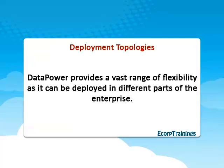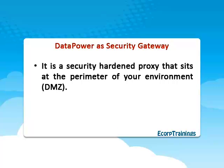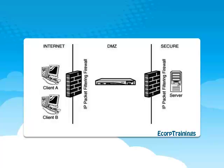DataPower SOA Appliances Deployment Topologies: DataPower provides a vast range of flexibility as it can be deployed in different parts of the enterprise. DataPower offers security capabilities — it is a security-hardened proxy that locates at the perimeter of your environment. DataPower terminates incoming connections, ensures that the requests are safe, and passes them on into your infrastructure. DataPower deals with much more than the packet layer and the protocol layer; it operates up at the application layer.